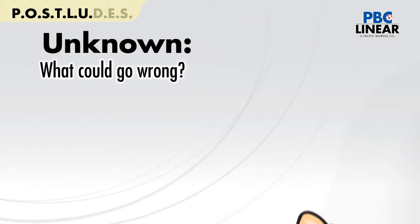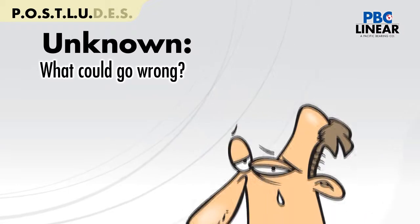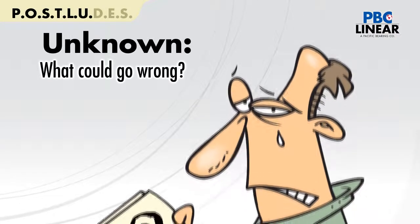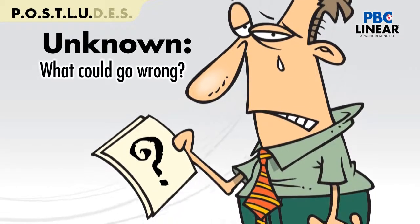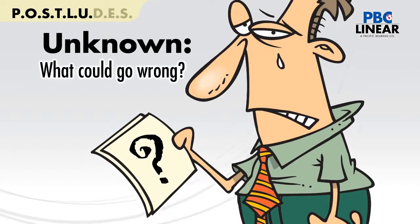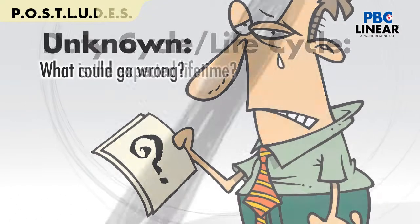U is for the unknown. Consider what could go wrong. If you don't know what could go wrong, there is someone who will tell you. His name is Murphy.